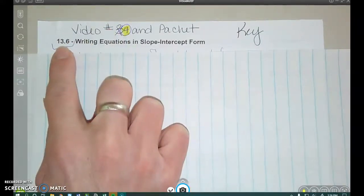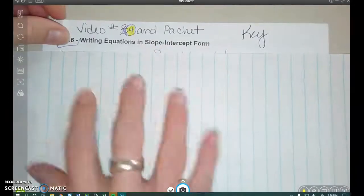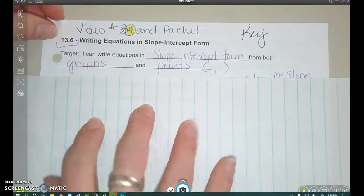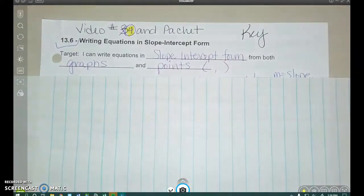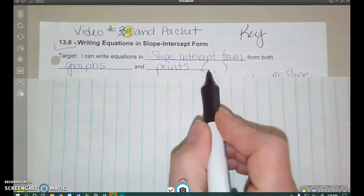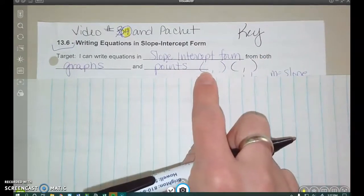It goes with section 13.6, and we're going to be writing equations in slope-intercept form. Okay, so here's our target. We want to be able to write equations in that slope-intercept form that we've been using throughout the chapter from both graphs and points, right? Like coordinate points. If I give you two points from a graph, could you use those to write the equation?